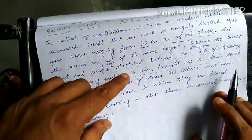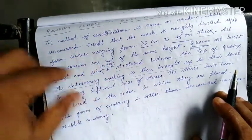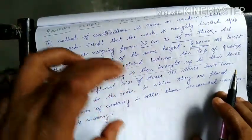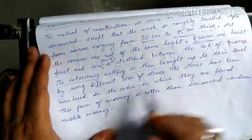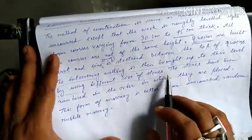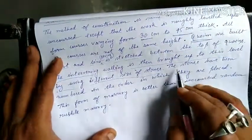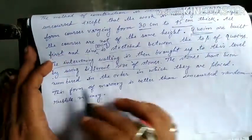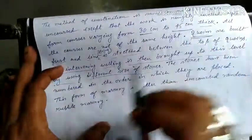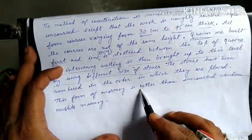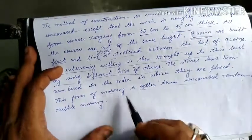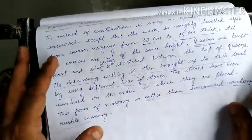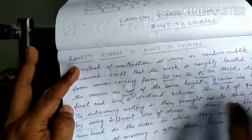One course may be 3 cm and another 3 cm in varying heights. By using different sizes of stones, the required course height is achieved. The stones are numbered in the order in which they are placed. This coursed random rubble method is better quality than uncoursed random rubble masonry.